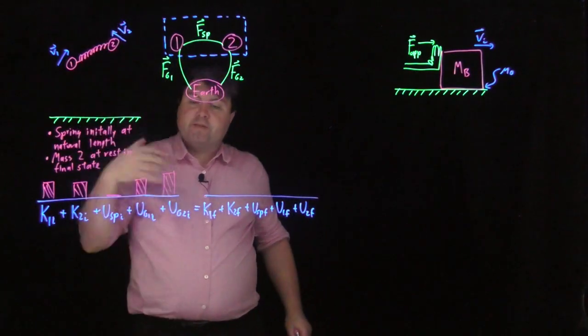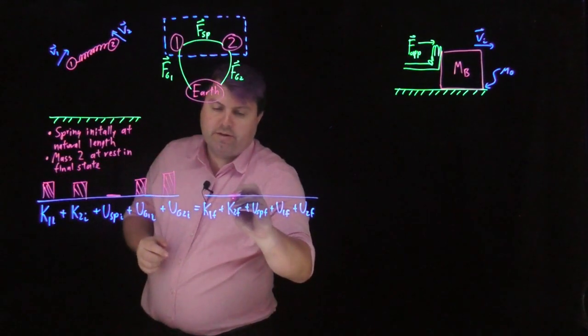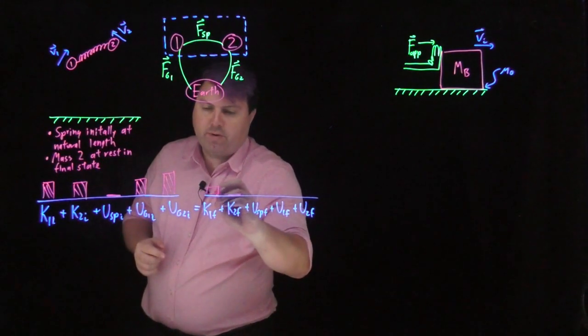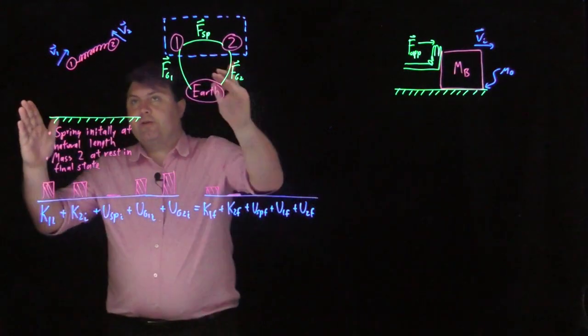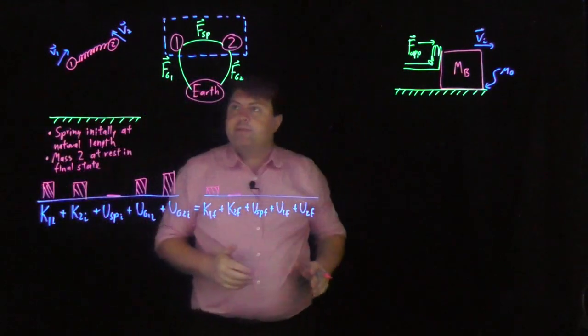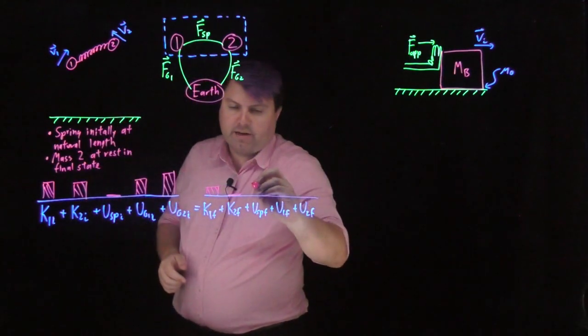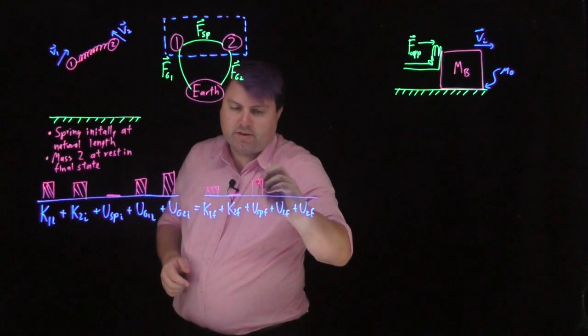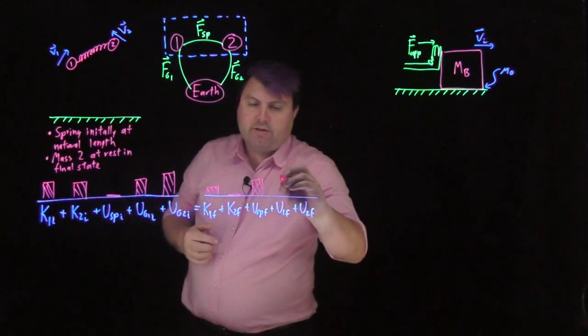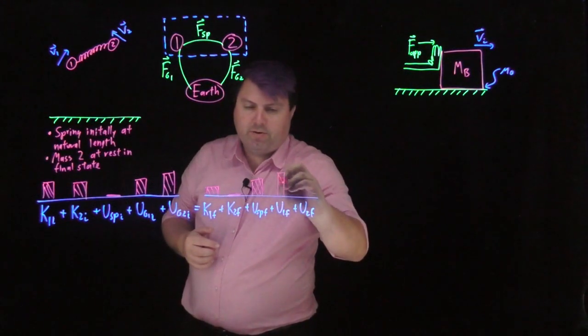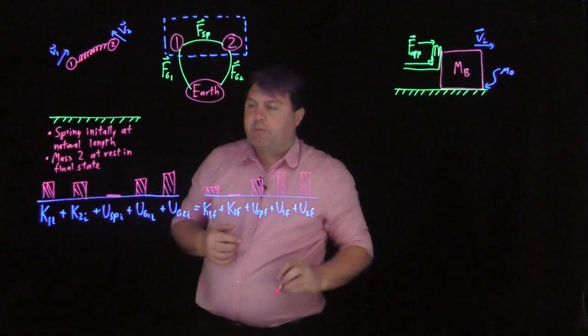As these two are going up, we expect them to slow down. In fact, we're told that mass two is at zero and mass one probably much, much less. Our spring is either going to be condensed or expanded based on what's going to happen. We don't think it's going to be at its natural length, so we're going to have to put something for this. And then as they're going up, we're going to say that these two potential energies are probably going to be a little bit higher.